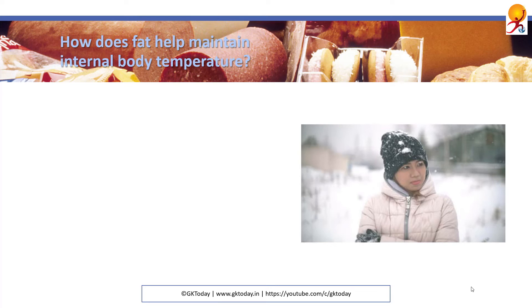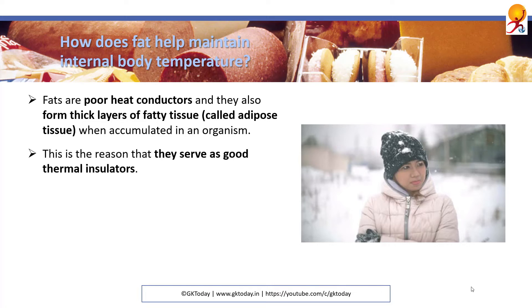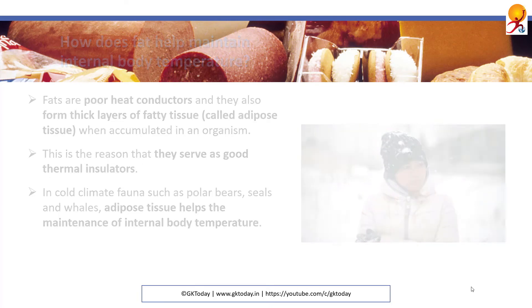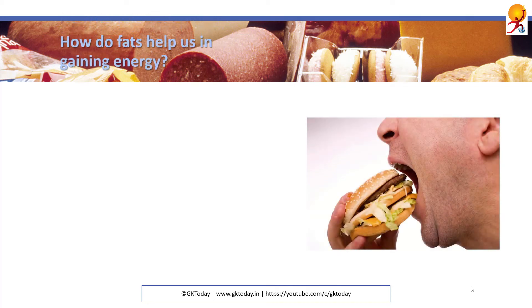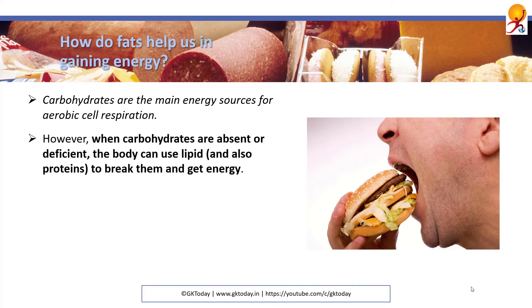How does fat help maintain internal body temperature? Fats are poor heat conductors, so they form thick layers of fatty tissues, also called adipose tissue, when accumulated in an organism. This is the reason they serve as good thermal insulators. In cold climate fauna such as polar bears, seals and whales, adipose tissue helps them maintain their internal body temperature. Regarding energy: carbohydrates are the main energy sources for us, however when carbohydrates are not present or sufficient, the body can use lipids and also proteins to break them down and get energy.